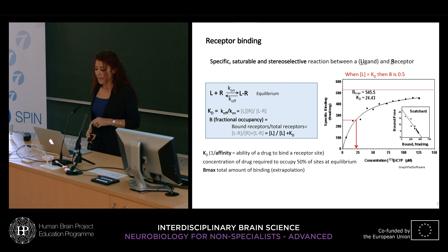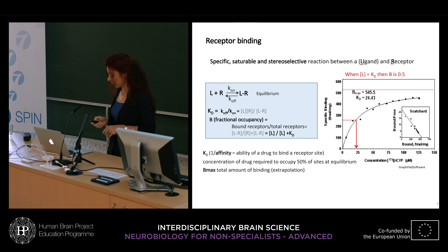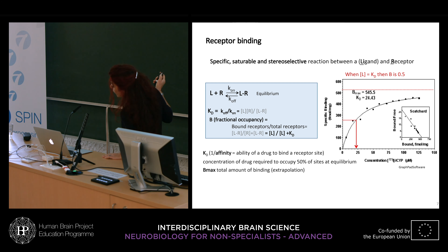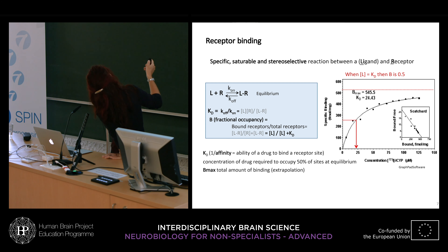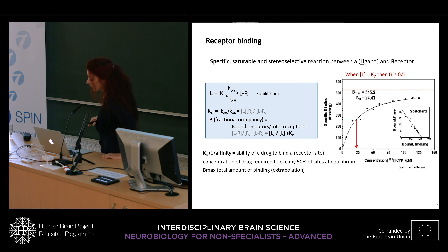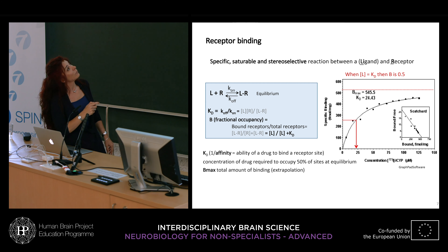Here is an example of one of these experiments. The kind of hyperbolic curve you may have already seen: as the concentration of radioactive ligand increases, this is the specific binding obtained. The point where receptor occupancy is half of the maximum value is the K-D. The Bmax can be obtained by extrapolation — for example, by doing a linearization of this graphic as a Scatchard plot.